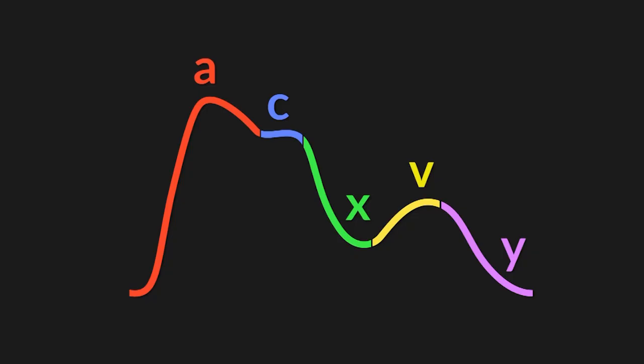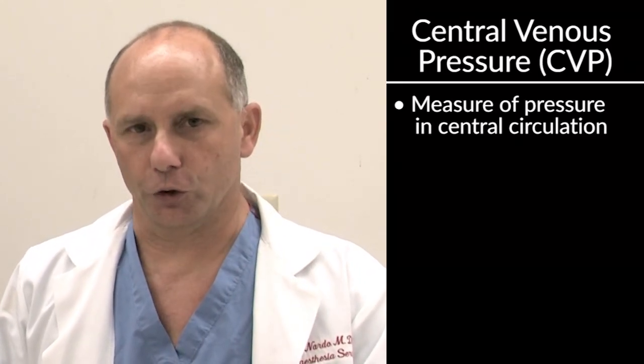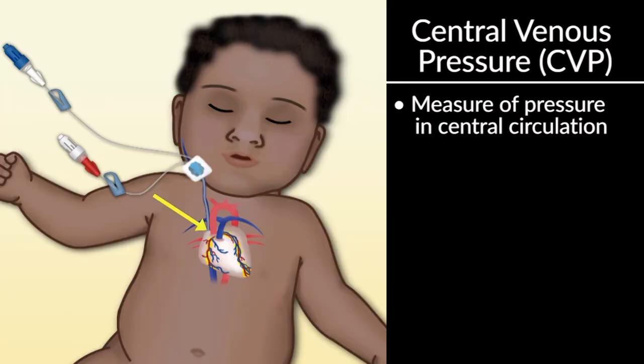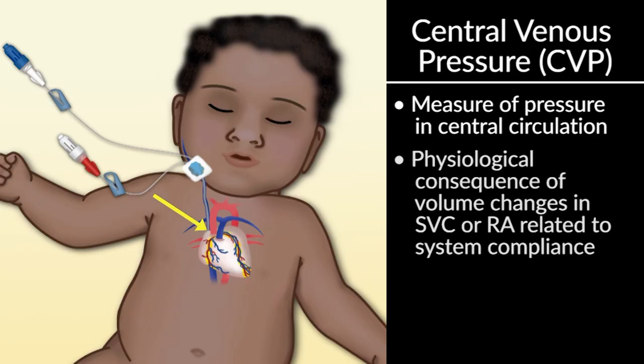So again, it's important to remember that when we're measuring a CVP, we are in fact measuring a pressure in the central circulation, so in the superior vena cava or in the right atrium, depending on where the tip of the catheter is. But in fact, what's happening is this pressure is a consequence physiologically of volume changes in the superior vena cava or the right atrium in the setting of the compliance of those two systems.